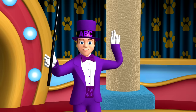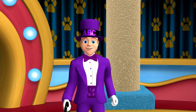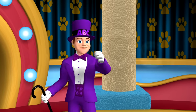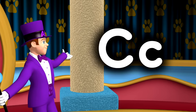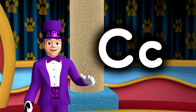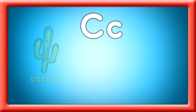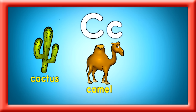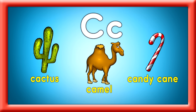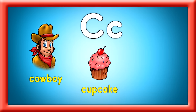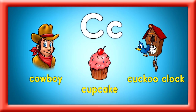Cool. You've got down the letters A and B. Look at the capital C and the lowercase c. Cactus, camel, candy, cane. All these words begin the same. Cowboy, cupcake, cuckoo, clock. These are C words. Now let's rock.